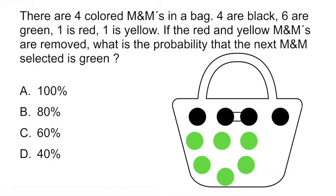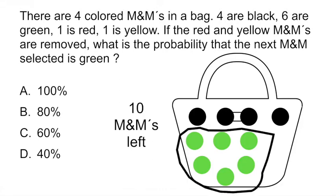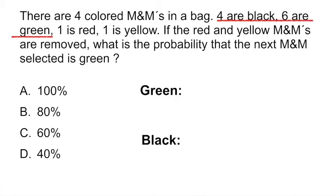So this is what it looks like. And that leaves you with 10 M&Ms in the bag and they want to know what's the probability of picking a green one. So we know that there are 6 green M&Ms in the bag and there's a total of 10 M&Ms in the bag. So the probability of picking a green one would be 6 over 10 or 60%. And the black ones, we know that there's 4 black M&Ms and there's 10 total M&Ms in the bag. So the probability would be 40%.